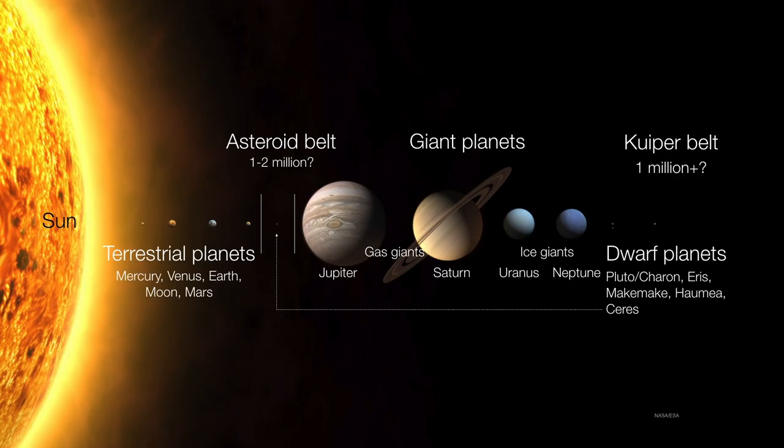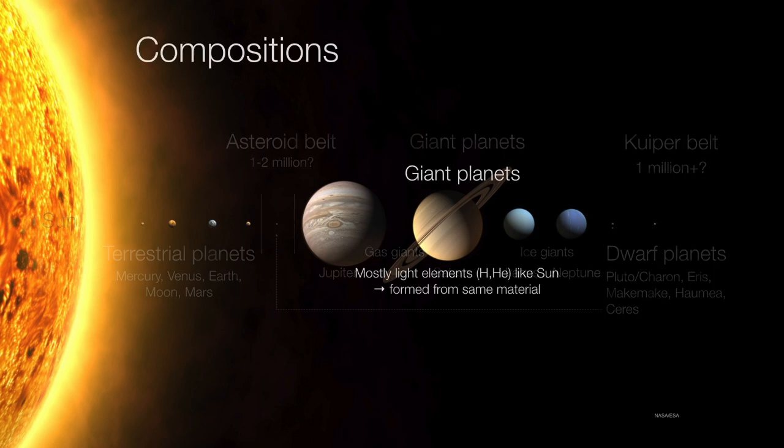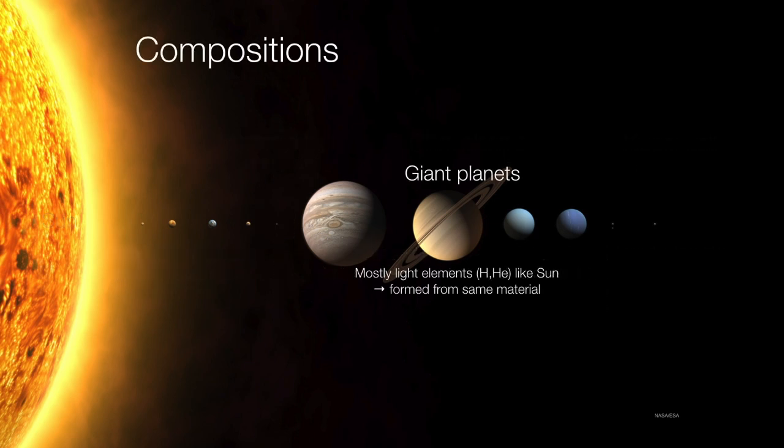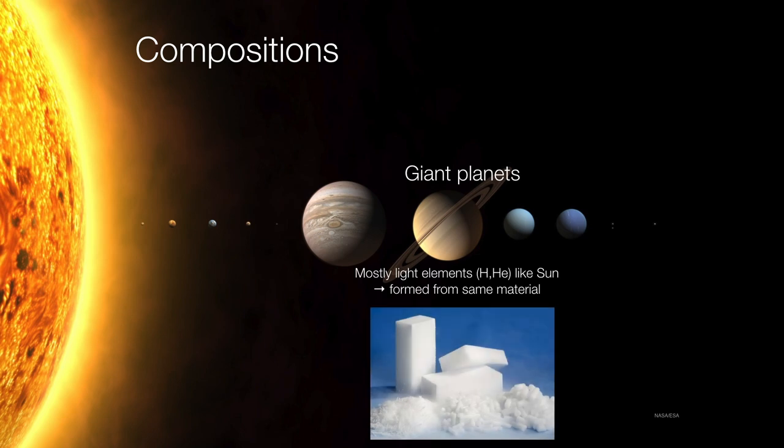So as we gaze around the solar system, we find there's a variety of objects, namely giant planets and terrestrial planets. Giant planets are composed of mostly lightweight materials, what we call volatiles. For example, this is dry ice, frozen carbon dioxide, and frozen ammonia. So we're going to have these very lightweight materials such as hydrogen, helium, methanes, and chlorofluorocarbons all cold enough to become an ice. And it's for this reason that these planets have a relatively low density.